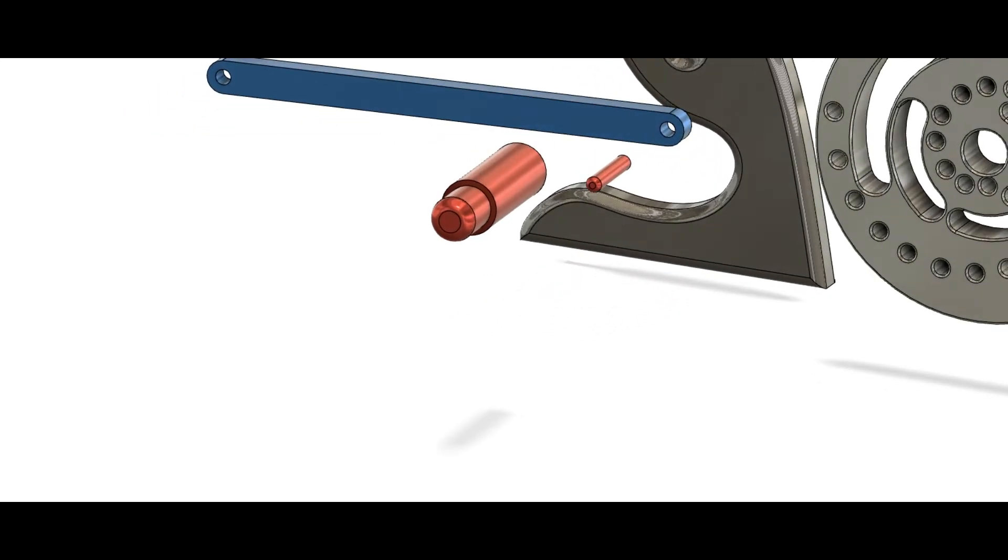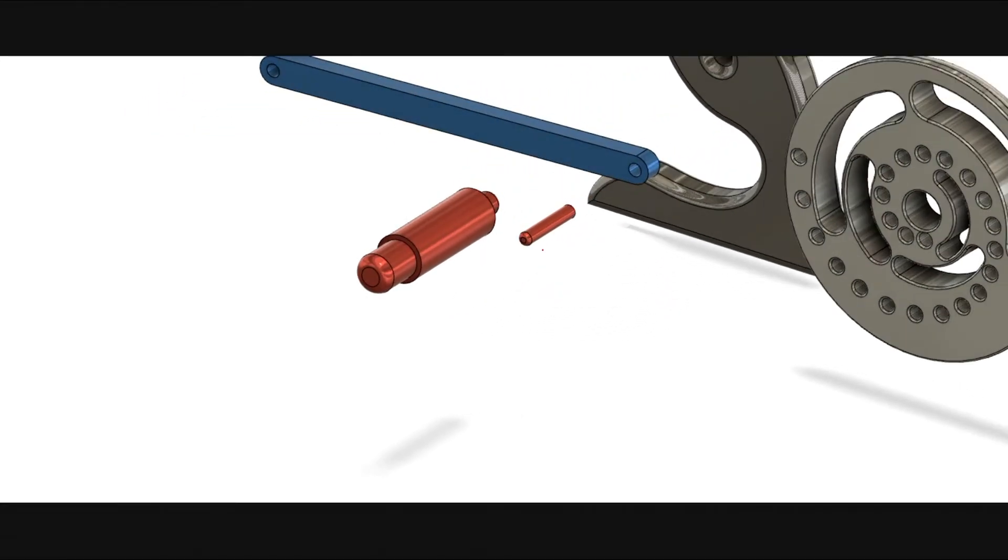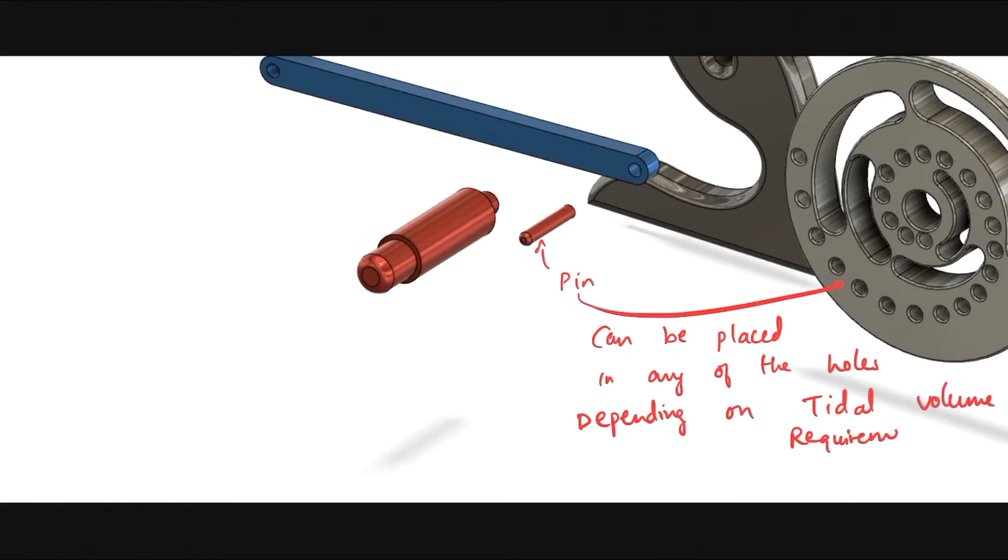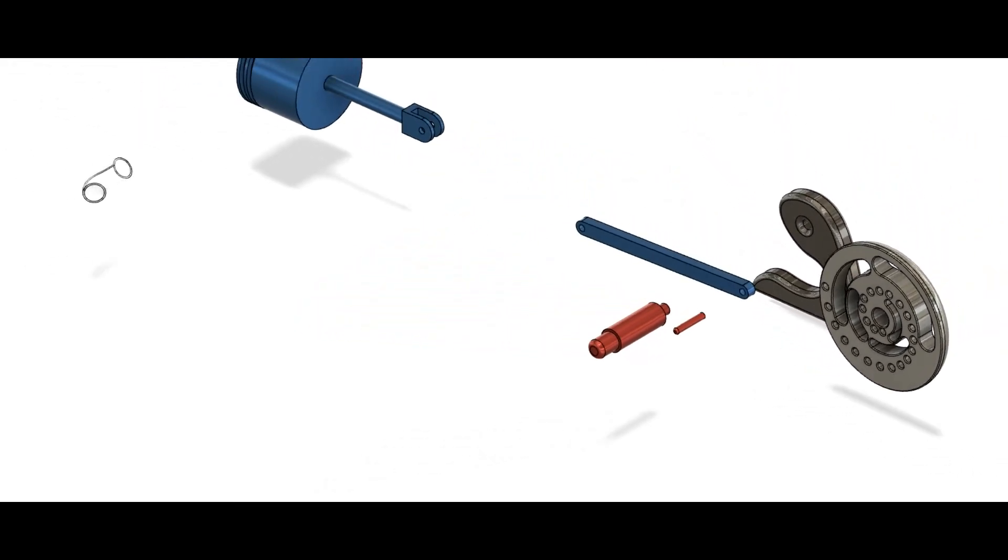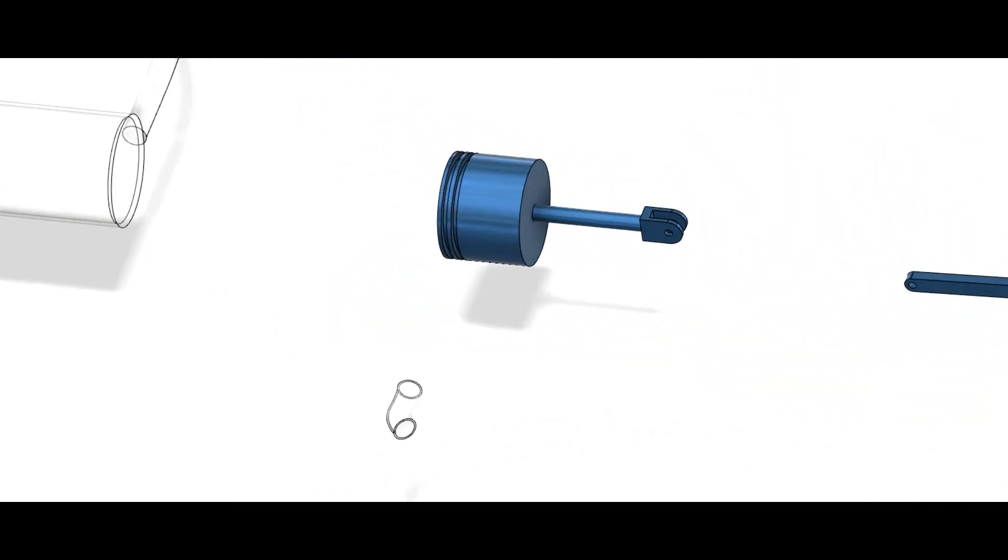Don't worry about this if you are feeling this is complicated. We will discuss it more in detail as we progress further. This tiny red thing is a pin which will connect the distal end of the connecting rod to the required hole on the wheel based on the tidal volume requirement.